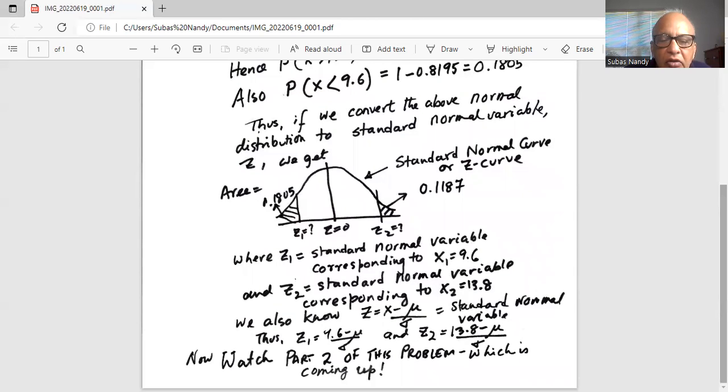We know the definition of the standard normal variable: Z = (X - μ)/σ. That is, Z indicates how many standard deviations above the mean (if positive) or below the mean (if negative) the normal random variable X is.